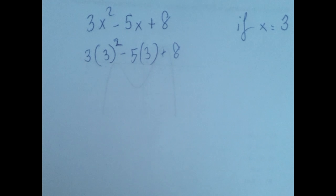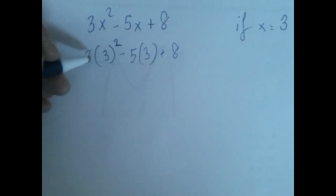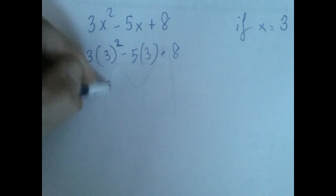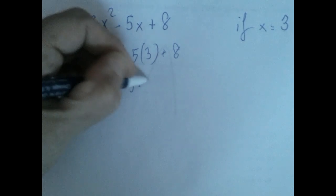Now it became an order of operations problem. We go left to right. Exponentiations first. 3 times 9 minus 5 times 3 plus 8.